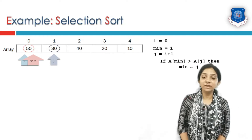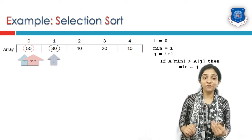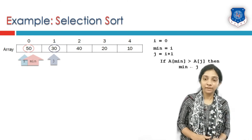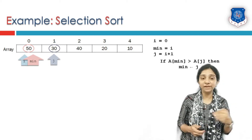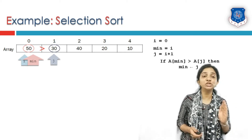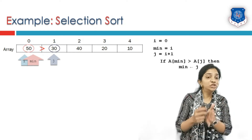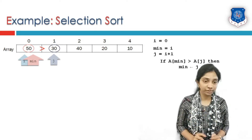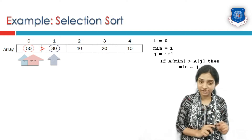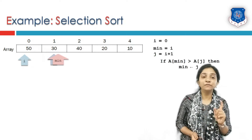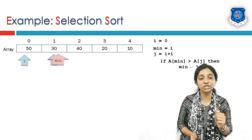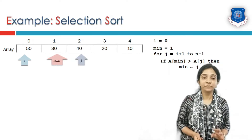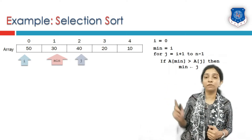We compare the minimum element, that is the element at index min, with the element at index j. If element at min is greater than element at j, we have to change our minimum index because the jth element is actually the minimum element. In this case 50 is compared with 30. Is 50 greater than 30? Condition is true. So we will change our min index to j index. Wherever j is, min will switch, and j is incremented with the help of a for loop.